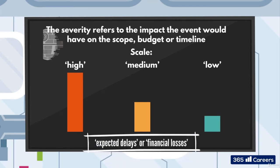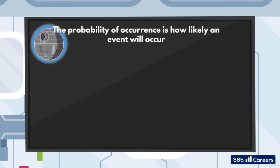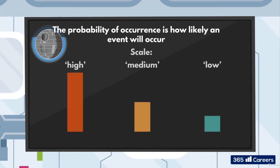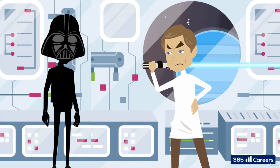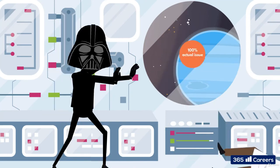The probability of occurrence is how likely an event will occur. Again, a simple scale of high, medium or low probability can be used, or depending on the project, perhaps it could be measured by percentage. Obviously, 100% would no longer make it a risk — rather something that is certain and would make it an actual issue.